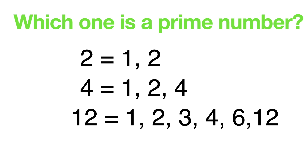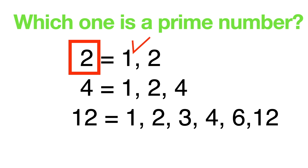Which one is a prime number? Correct. Two is a prime number, because two has only two factors: one and itself, two.